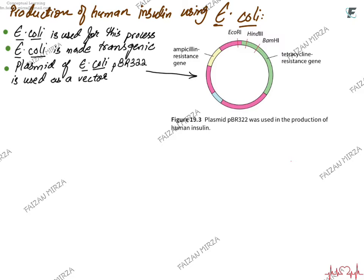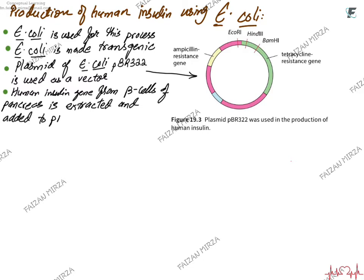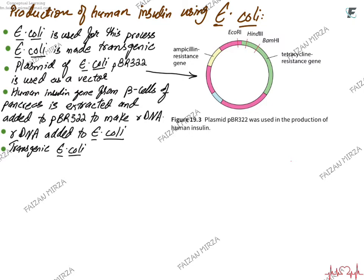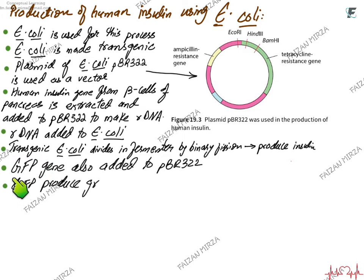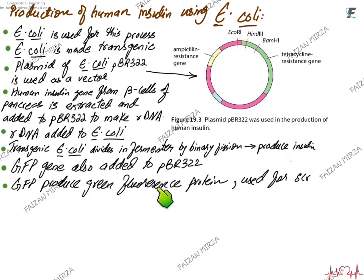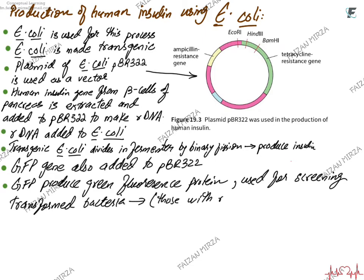The human insulin gene is taken from the beta cells of the pancreas. This extracted gene is then added to the PBR322 plasmid, and the resulting DNA becomes recombinant DNA. This rDNA is added back into E. coli, making it transgenic or transformed E. coli. The transgenic E. coli then divides by binary fission in fermenters, producing clones that all produce insulin. A GFP gene is added to PBR322 to allow screening — transformed bacteria are identified by green fluorescence.